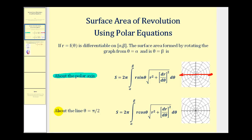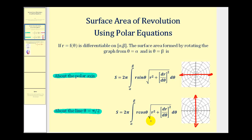If we rotate about the line theta equals pi over two, that is the same as rotating about the y-axis. In parametric form we had x as our radius, but now we replace that with r cosine theta, and the arc length formula is written for polar equations rather than parametric equations. These formulas can be derived using the same approach as with parametric equations, but for this video we're just going to look at an example.